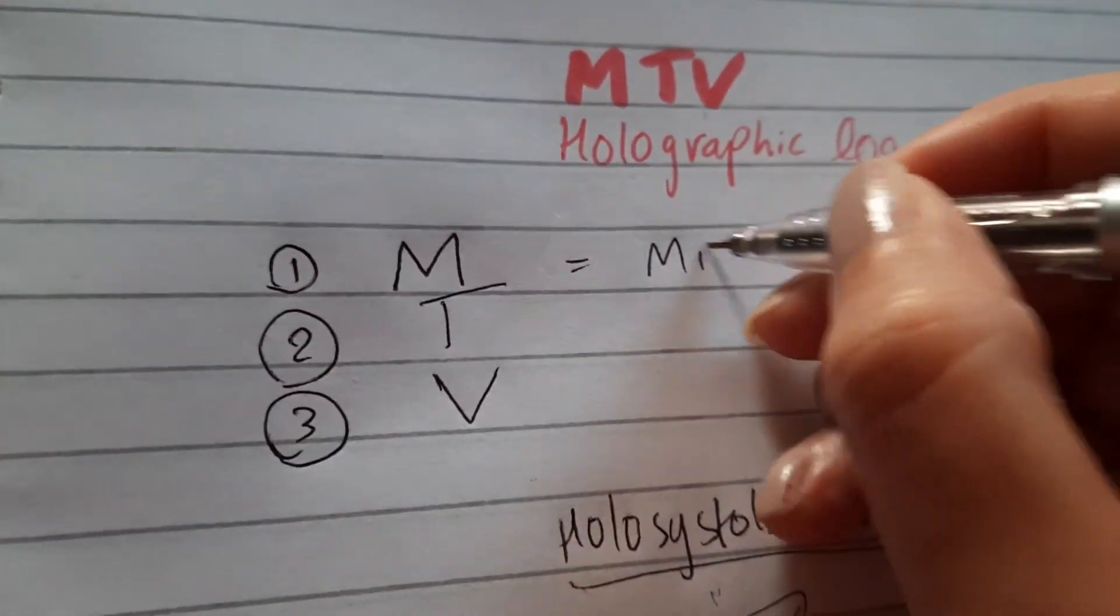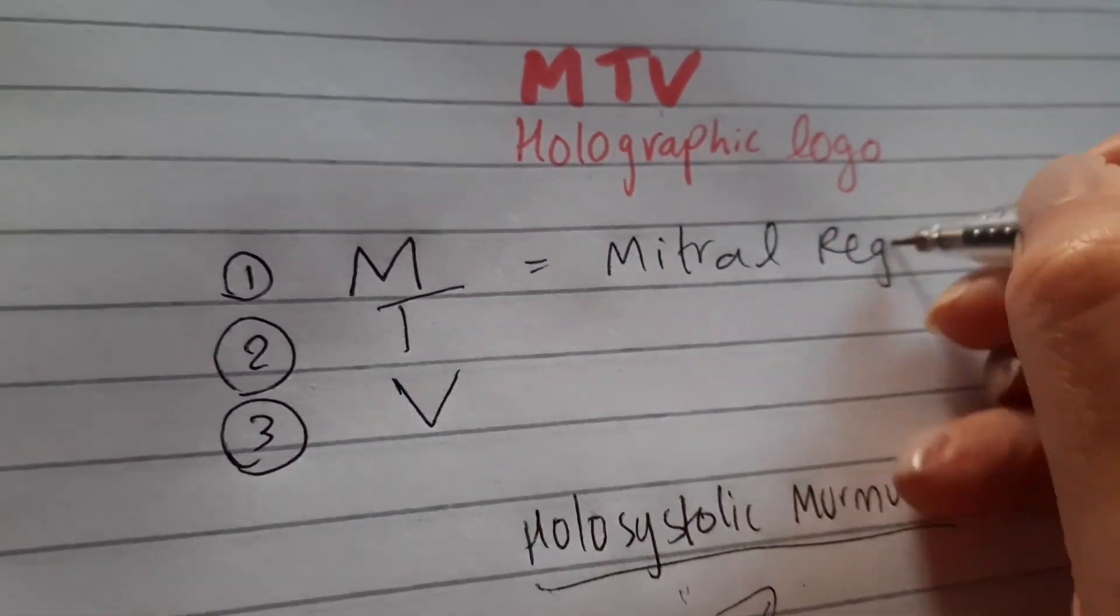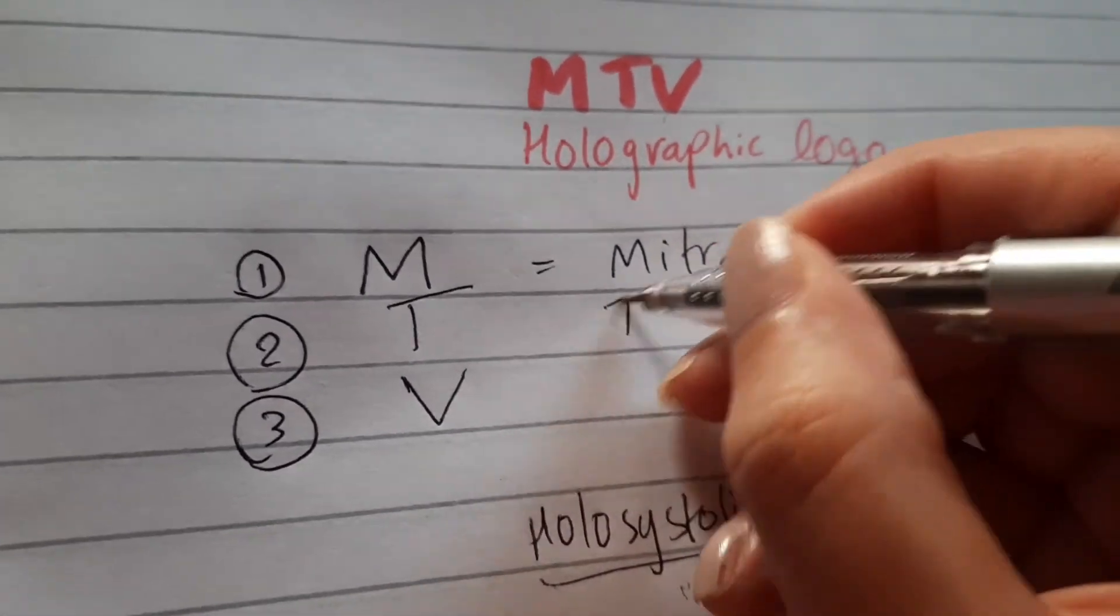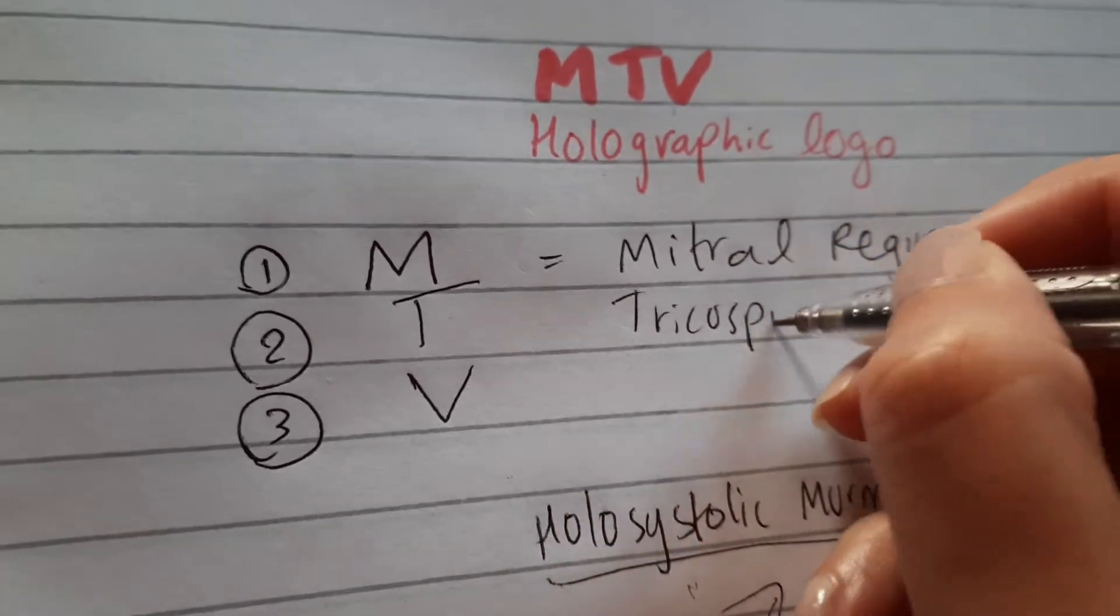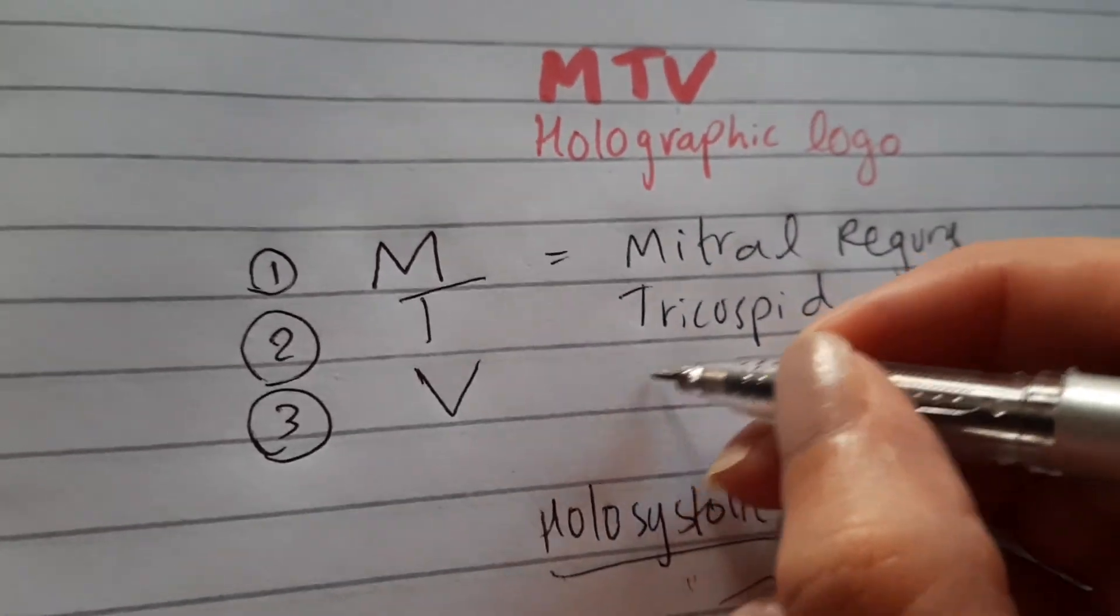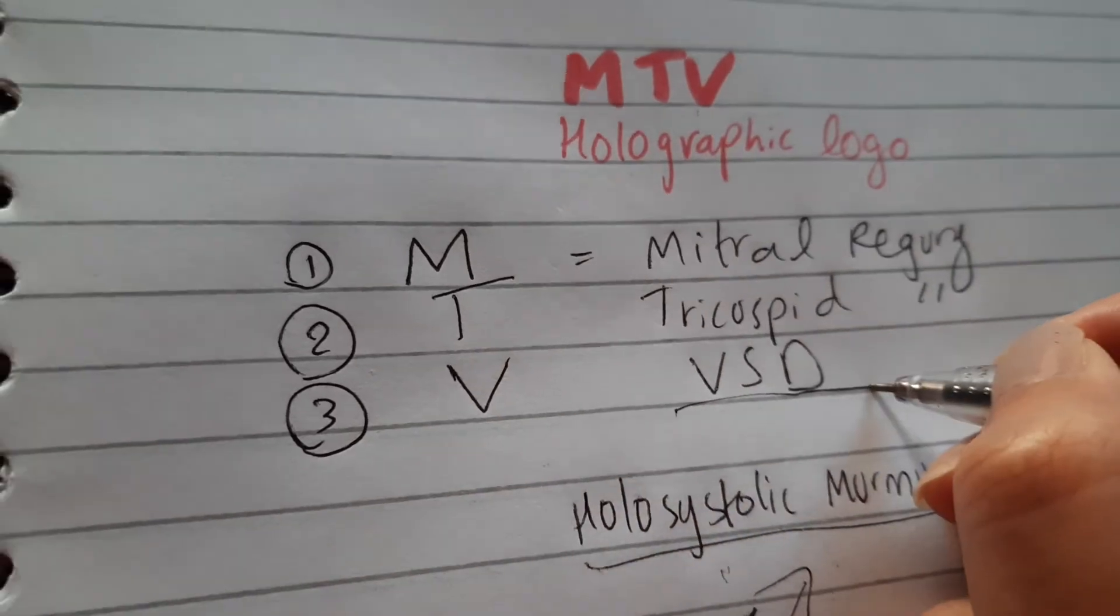So M is mitral regurgitation, T is tricuspid regurgitation, and V is VSD, which is a ventricular septal defect.